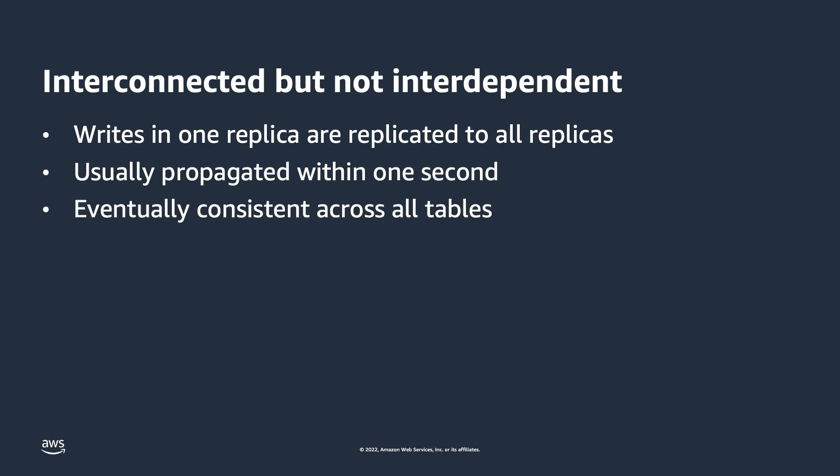Keep in mind these writes are eventually consistent across global table replicas. As you might imagine, this means you could have conflicts if you are updating the same item in one or more regions. In this case, global tables will use what's called the Last Writer Wins algorithm to reconcile the conflicts. Last Writer Wins means that whichever replica writes the latest version of the item, that is the one that wins and will be written to all other replicas.